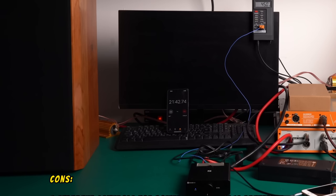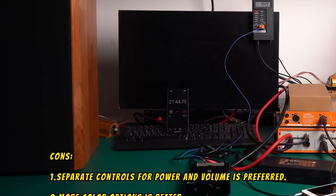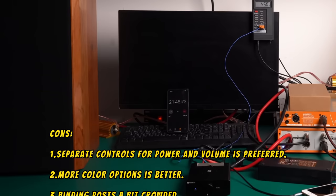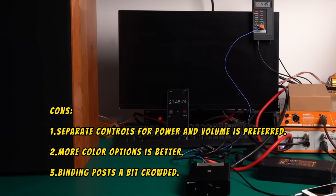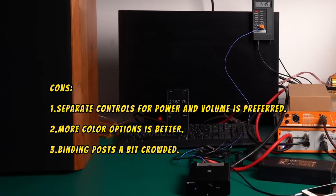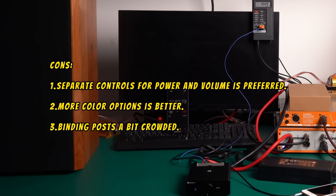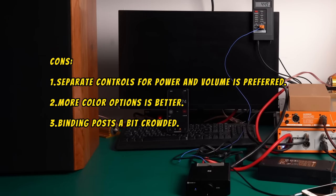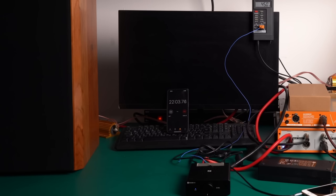Cons: 1. My personal preference leans towards a design with separate controls for power and volume. 2. The casing color is black, it would be better if there were other color options available. 3. The spacing between the binding posts is slightly crowded, widening it would make it more convenient. In conclusion, it's truly outstanding that the V3 can deliver such performance at a price point under $100.